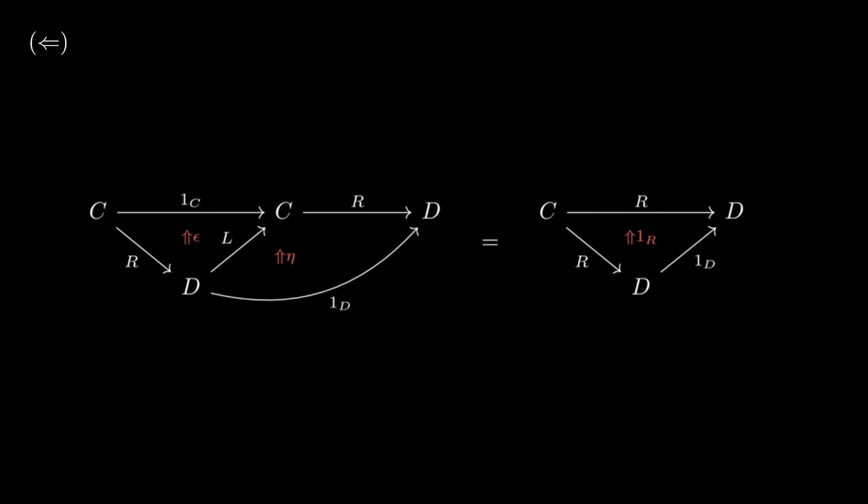since the right map is the identity on D, the entire diagram is just this one on the right, with natural transformation the identity on R. This is the first triangle property, so it just remains to show the other one.